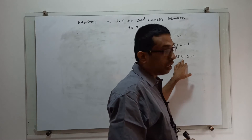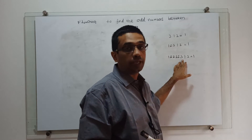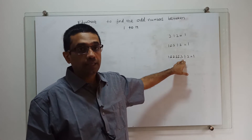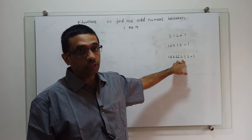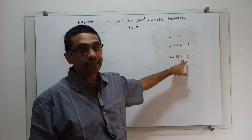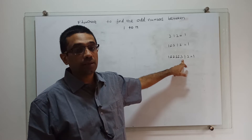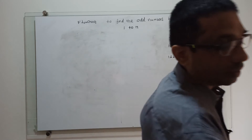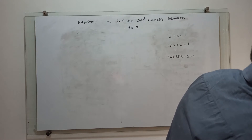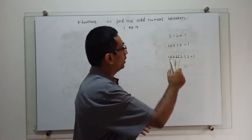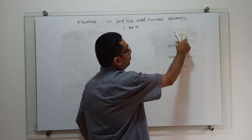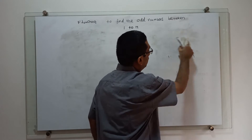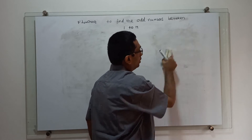We have to use this logic to draw the flowchart to find the odd numbers between 1 to n. Now we will draw the flowchart.